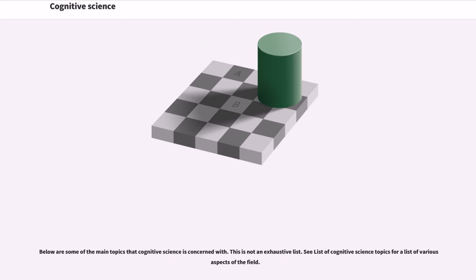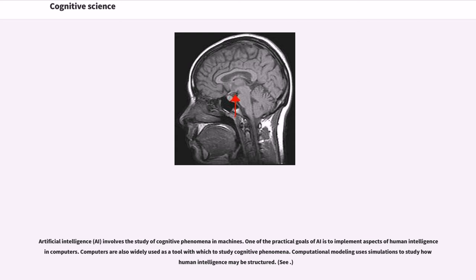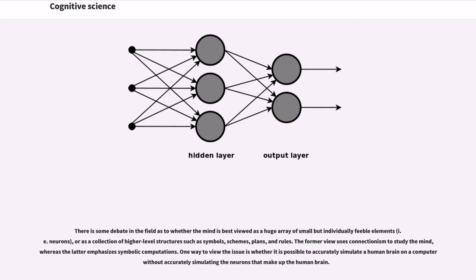Below are some of the main topics that cognitive science is concerned with. Artificial intelligence, AI, involves the study of cognitive phenomena in machines. One of the practical goals of AI is to implement aspects of human intelligence in computers. Computers are also widely used as a tool with which to study cognitive phenomena. Computational modeling uses simulations to study how human intelligence may be structured. There is some debate in the field as to whether the mind is best viewed as a huge array of small but individually feeble elements, i.e. neurons, or as a collection of higher level structures such as symbols, schemes, plans, and rules. The former view uses connectionism to study the mind, whereas the latter emphasizes symbolic computations.